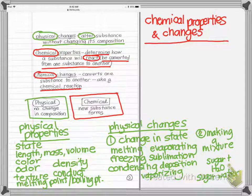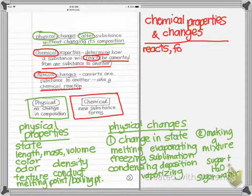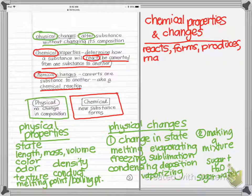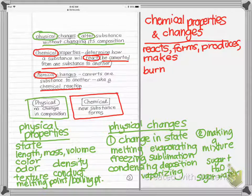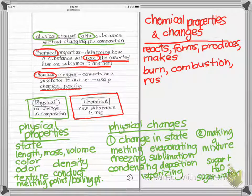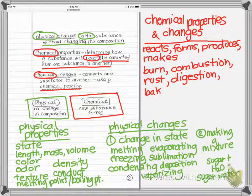Words that describe reactions are what we need for chemical properties and changes. Sometimes they're simply words that tell us something new is happening: reacts, forms, produces, makes. Other times they tell us a reaction is occurring: burn, combustion, rusting, digestion, baking, decomposing, oxidation.